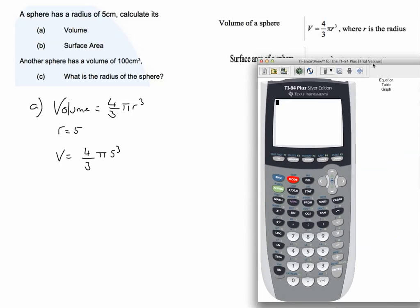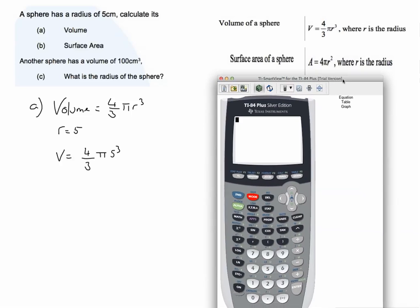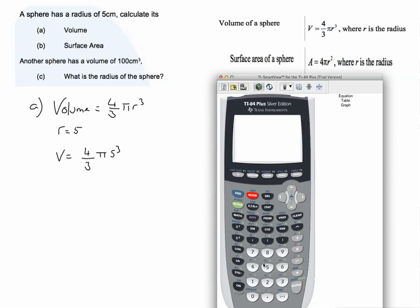Now over here we've got our calculator. We can put all of that into our calculator in one go. So I'm going to put four divided by three times pi, which is the second button there, depending on which calculator you're using, times five to the power of three.